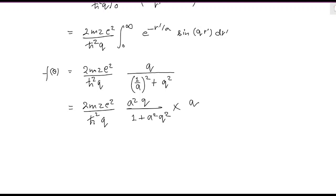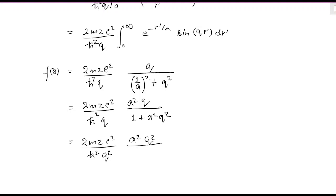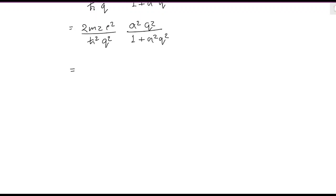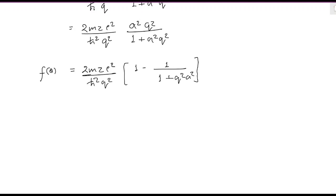Multiplying and dividing by q, we get f(θ) = 2m·Z·e² divided by ℏ²·q², all divided by (1 + a²·q²). This can also be written as 2m·Z·e² divided by ℏ²·q², times the quantity 1 minus 1/(1 + q²·a²). You can verify that both forms are equivalent.